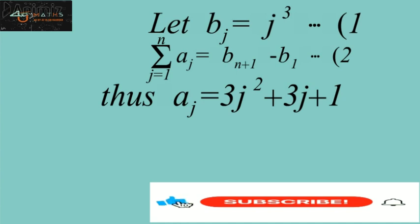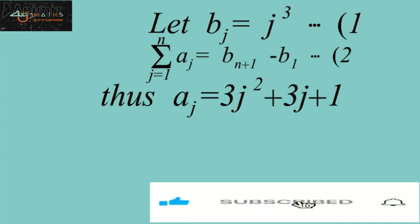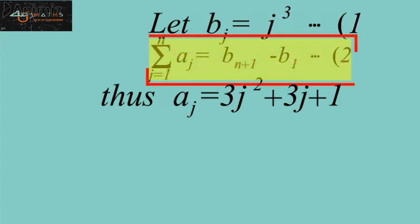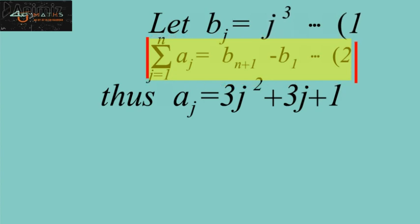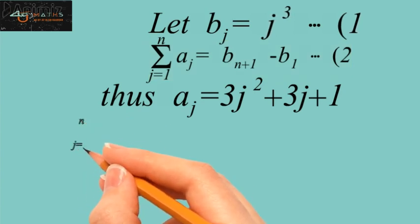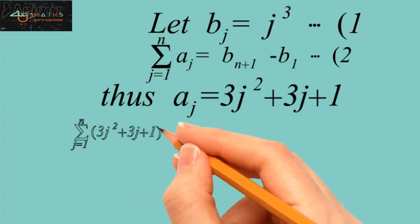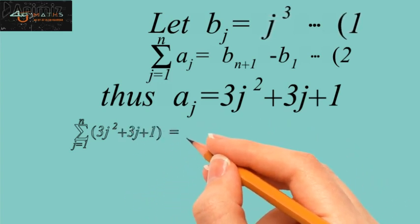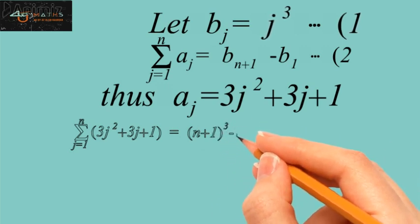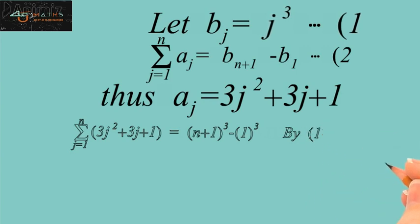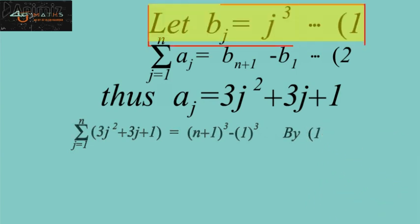Now using the result we obtained in the previous video, that is summation j=1 to n of aj equals b(n+1) - b1, we have: summation j=1 to n of (3j² + 3j + 1) on the left-hand side, while on the right-hand side we have (n+1)³ - 1³. On the right-hand side, we have used relation 1.